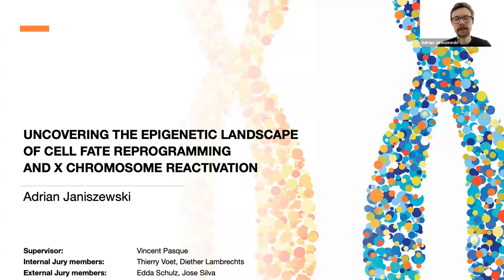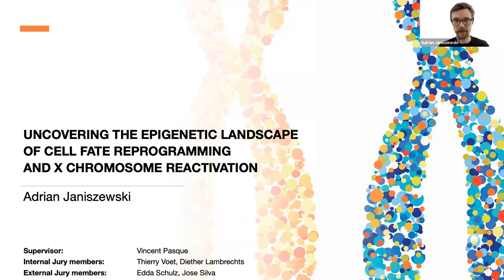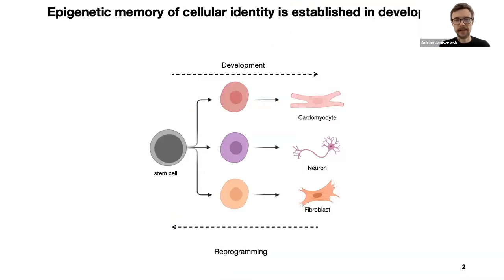Hi, I'm Adrian Yaniszewski. I'm a PhD student in the lab of Vincent Pask, and today I will tell you about how cellular identity is established during development and how it can be erased and completely forgotten. I've always been intrigued about how during development a single stem cell can give rise to a plethora of different cell types with distinct and highly specialized functions. We know that cells do it by going through a series of cell fate decisions, and once established, those decisions are remembered and propagated throughout cell divisions. And because all of that happens without changes in the genetic sequence, it is a remarkable example of how epigenetic memory of cell identity is established.